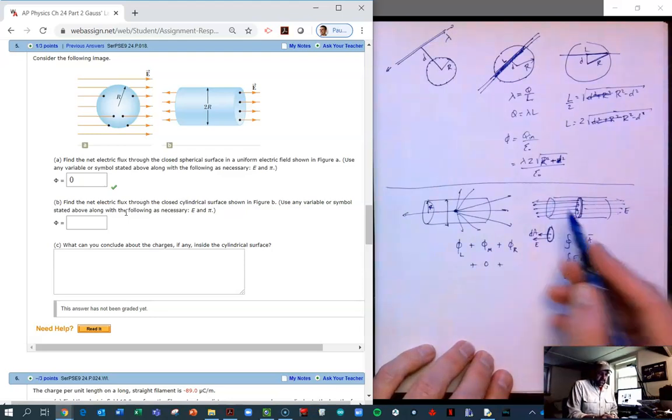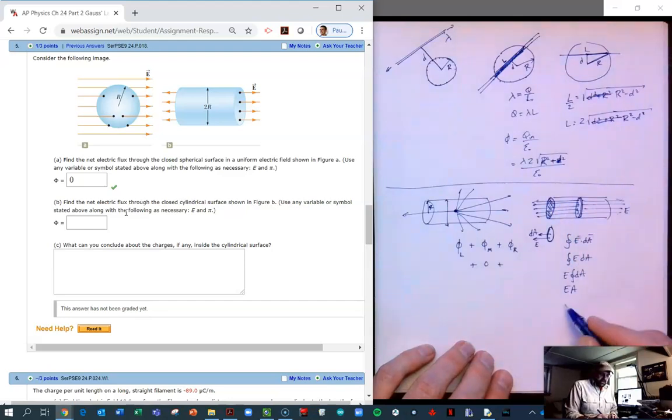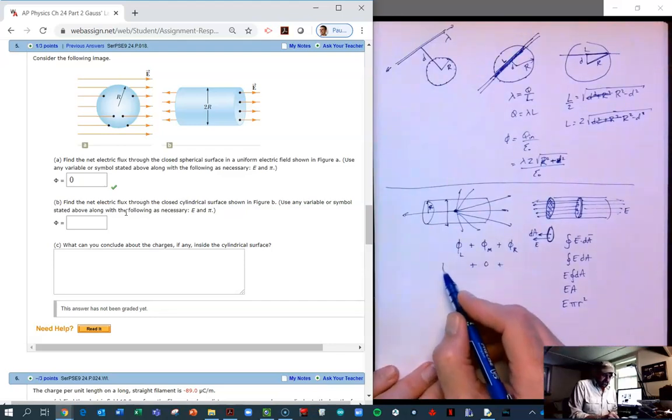And so here, the electric field times the area. And now what is the area of that surface, that n cap there? That's just the surface area of a circle. So that's going to be E times pi R squared.